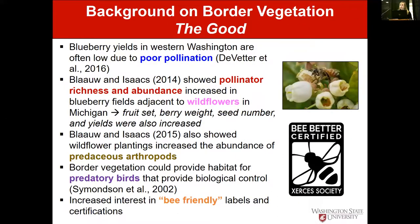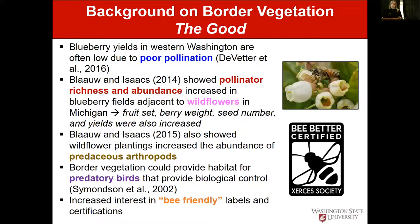To set the stage: pollination in blueberry is constrained, which can limit fruit set, berry size, and overall productivity here in western Washington. This constraint is primarily due to low pollinator activity during bloom time. Our primary pollinator is the honeybee, and conditions during bloom are often cold and wet, which really limits honeybee foraging. In our program we've been very interested in finding ways to improve pollination and fruit set.